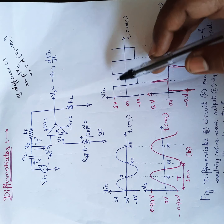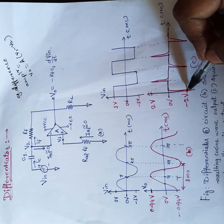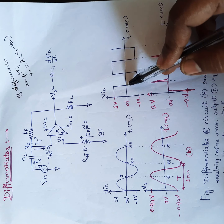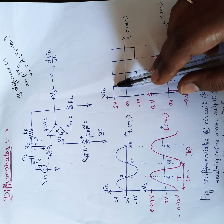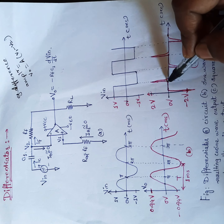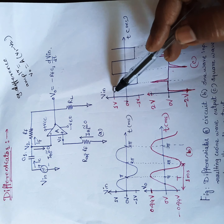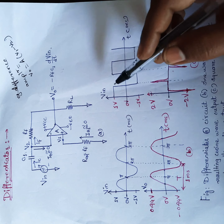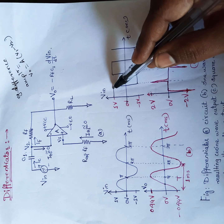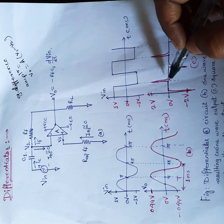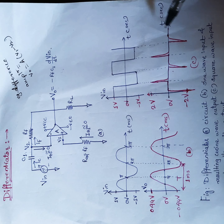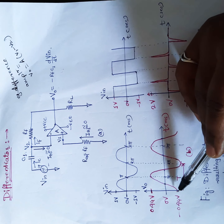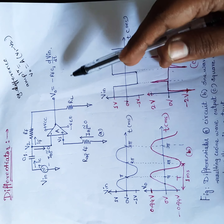For example, if we have a step input signal, the output will look like this: where the input is constant, the output will be zero, because the differential of any constant is zero. We get spikes only where the input changes from one level to another. Similarly, if the input signal is a sine wave, its output will be a cosine wave.